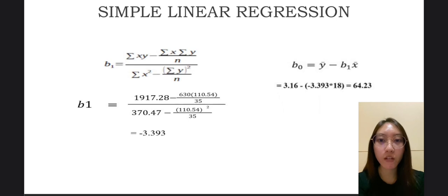This is simple linear regression we calculated. For B1 we got negative 3.393 and B0 answer is 64.32.